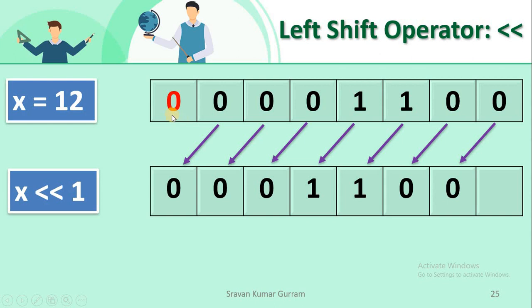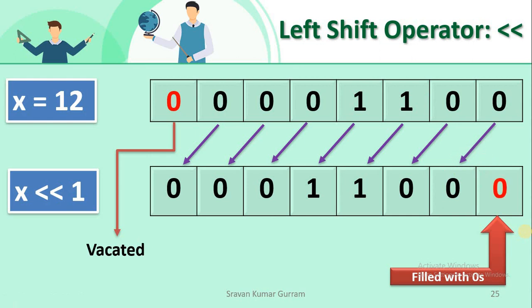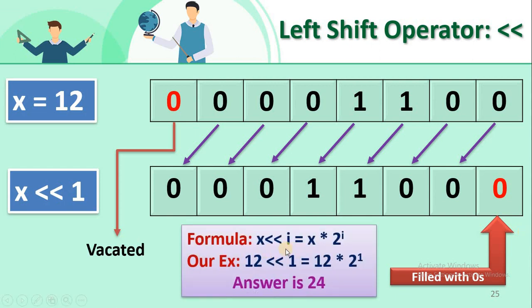When shifting left, if there is no space for a bit in the result it is vacated or deleted. Empty cells on the right are filled with zeros — one empty cell for a shift of one. So 12 left shift 1 = 12 × 2¹ = 12 × 2 = 24.